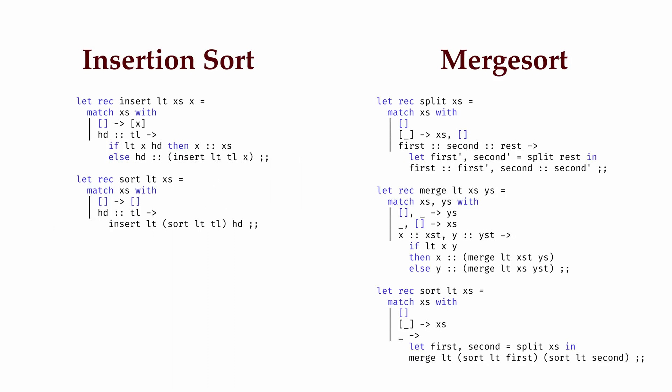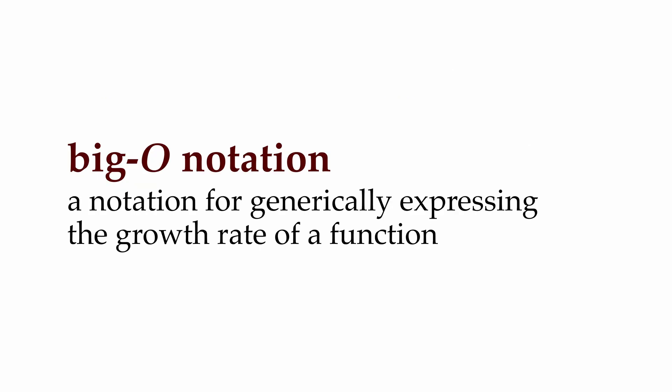With insertion sort and merge sort for example, insertion sort is often faster on smaller inputs, but as the inputs get larger, merge sort becomes much more efficient. We'd like to capture that fact. To solve these problems we'll use big O notation, a generic way of expressing the growth rate of a function.